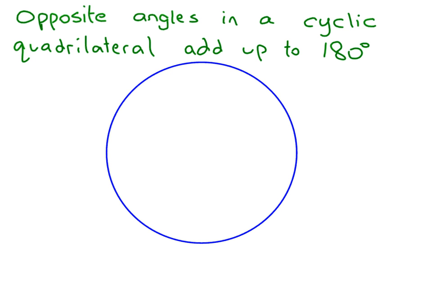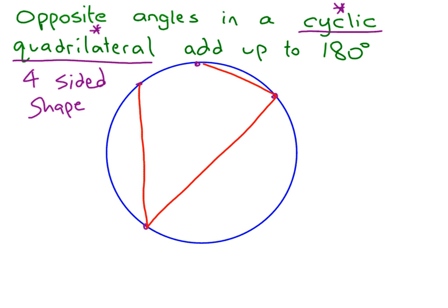Next one. Opposite angles in a cyclic quadrilateral add up to 180. I think this one sounds the most complicated, especially if you've never heard of cyclic quadrilateral before. All it means is that you're inside a circle, and you're drawing this quadrilateral, which is a four-sided shape with all of its corners on the circumference. So let's do one there. These can go wherever you want. One there. One there. So we join up the four points, and we're going to have a four-sided shape.